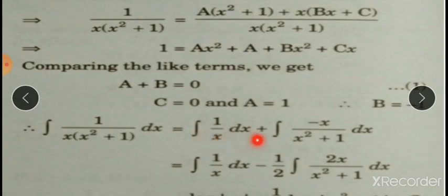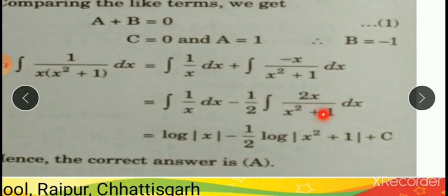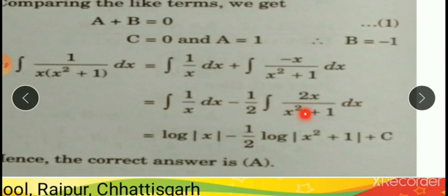Comparing like terms: coefficient of x² on right is a+b, and on left is 0, so a+b=0. Coefficient of x on right is c, and on left is 0, so c=0. The constant on right is a, on left is 1, so a=1. Therefore b=-1. We change into partial fraction as: integrate 1/x plus integrate (-x)/(x²+1). That is log|x| minus (1/2) integration of 2x/(x²+1). Using substitution (let x²+1=t, 2x dx=dt), this gives log t = log(x²+1). Our required answer is option a.